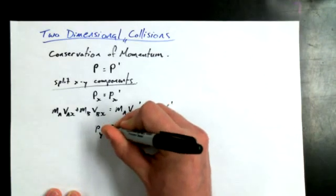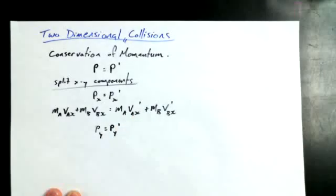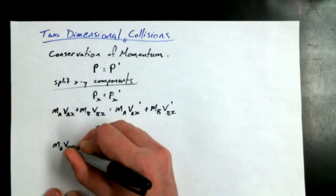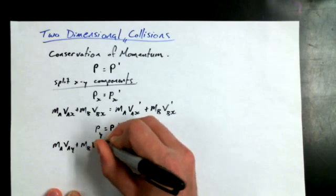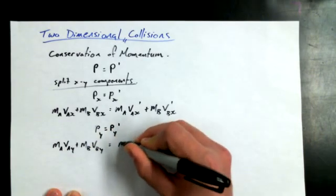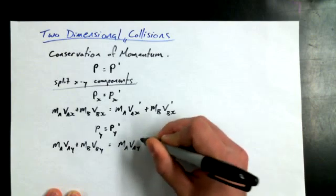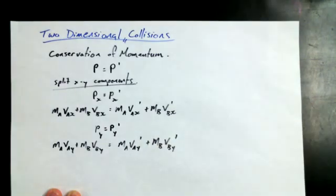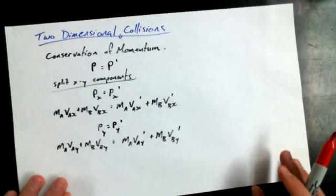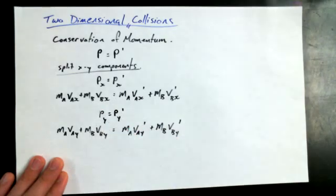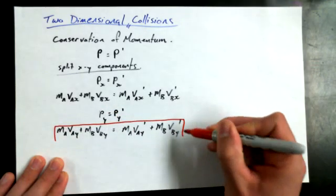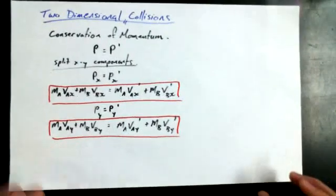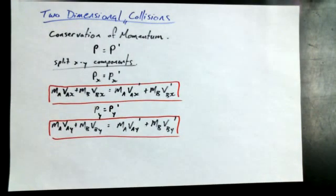And in the Y direction, like you might expect, momentum in the Y direction before is gonna be equal to the sum of all the momentums in the Y direction after the interaction. So, exactly the same format. But it's worth writing it out for mass A and for mass B. Just saying that in the X direction, momentum is conserved. And in the Y direction, momentum is conserved.